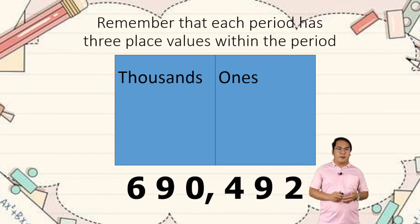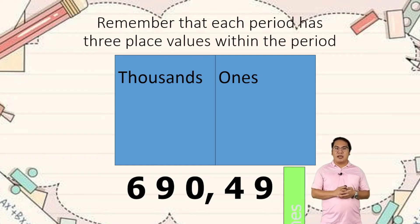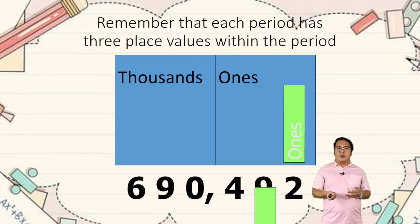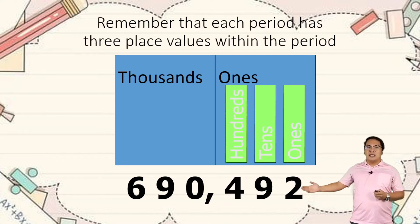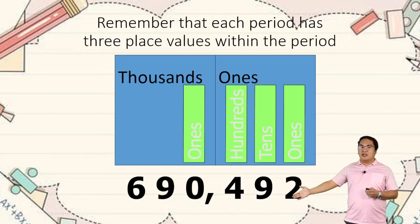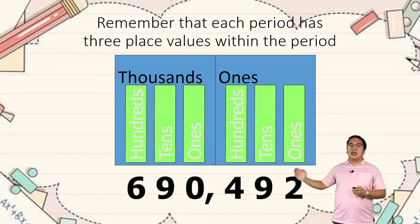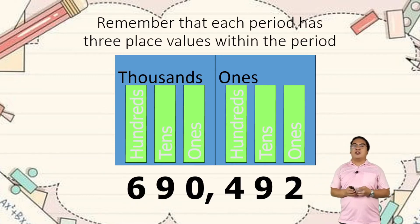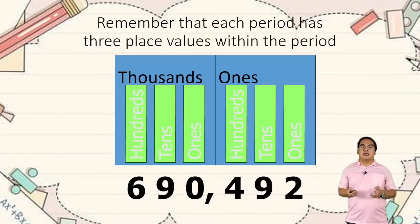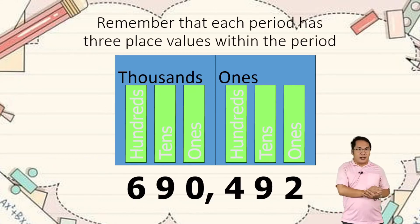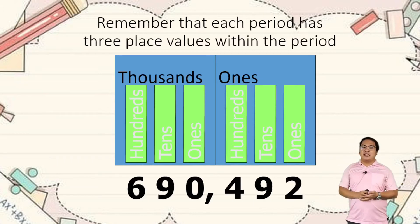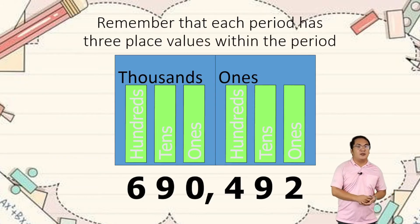Let's have the place value of each number. Remember that each period has three place values within the period. So we have the ones, tens, hundreds, thousands, ten thousands, and hundred thousands. Even though they are in the thousands place, they are called thousands or hundred thousands. For example, 690 thousand four hundred ninety two — these are the place values.